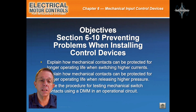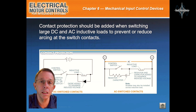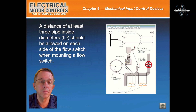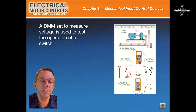Section 6-10: Preventing Problems When Installing Control Devices. Contact protection should be added when switching large DC and AC inductive loads to prevent or reduce arcing on switch contacts. A pressure relief valve may be added to a circuit to protect a pressure switch from excessive pressure. A distance of at least three pipe inside diameters should be allowed on each side of the flow switch when mounting it. A DMM set to measure voltage is used to test the operation of the switch.